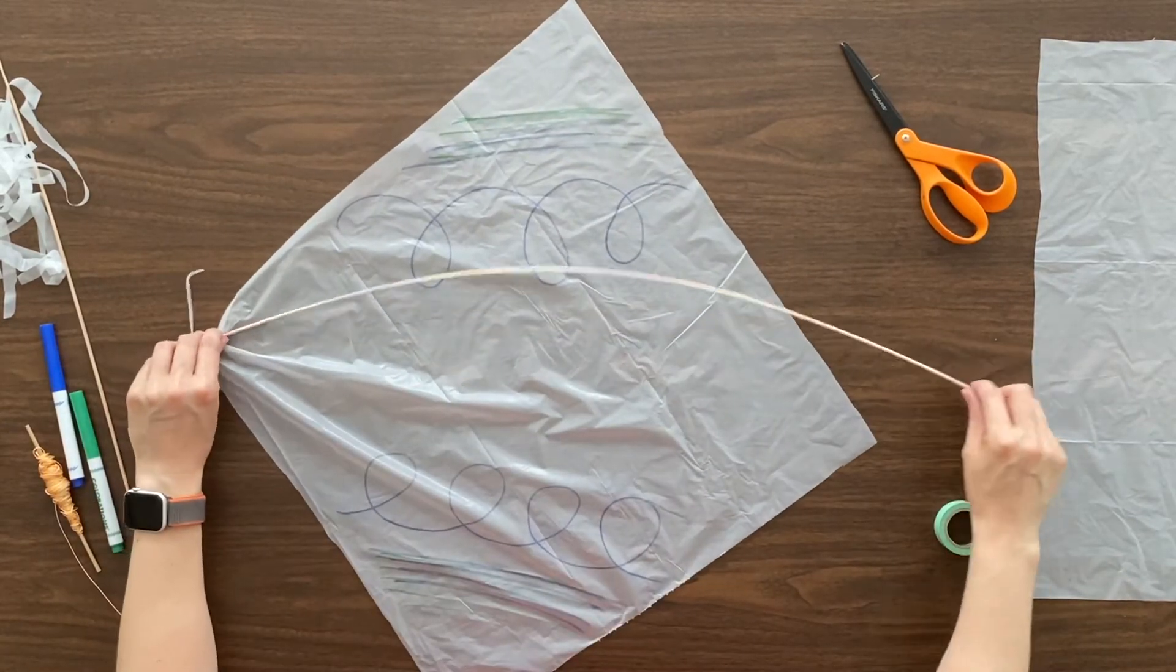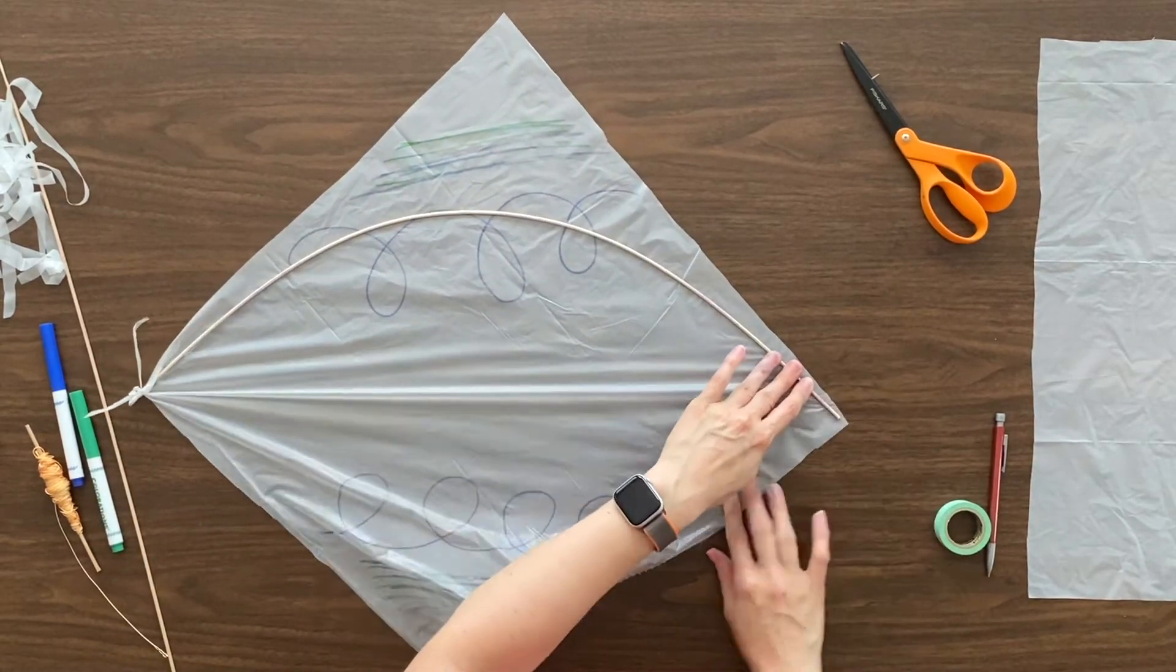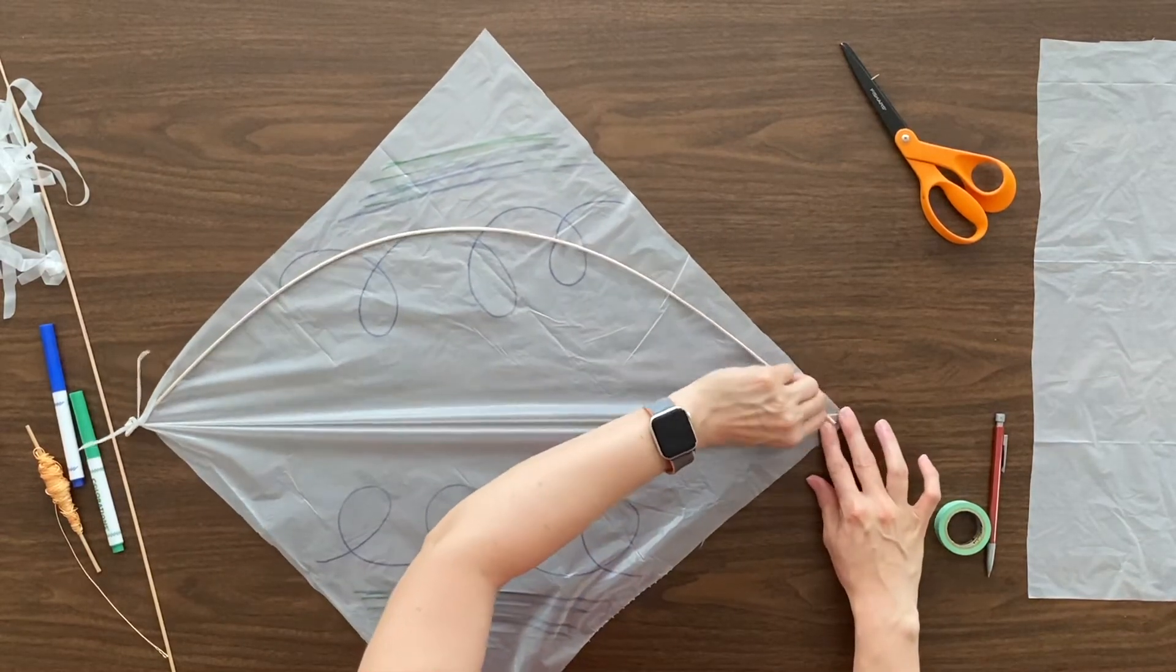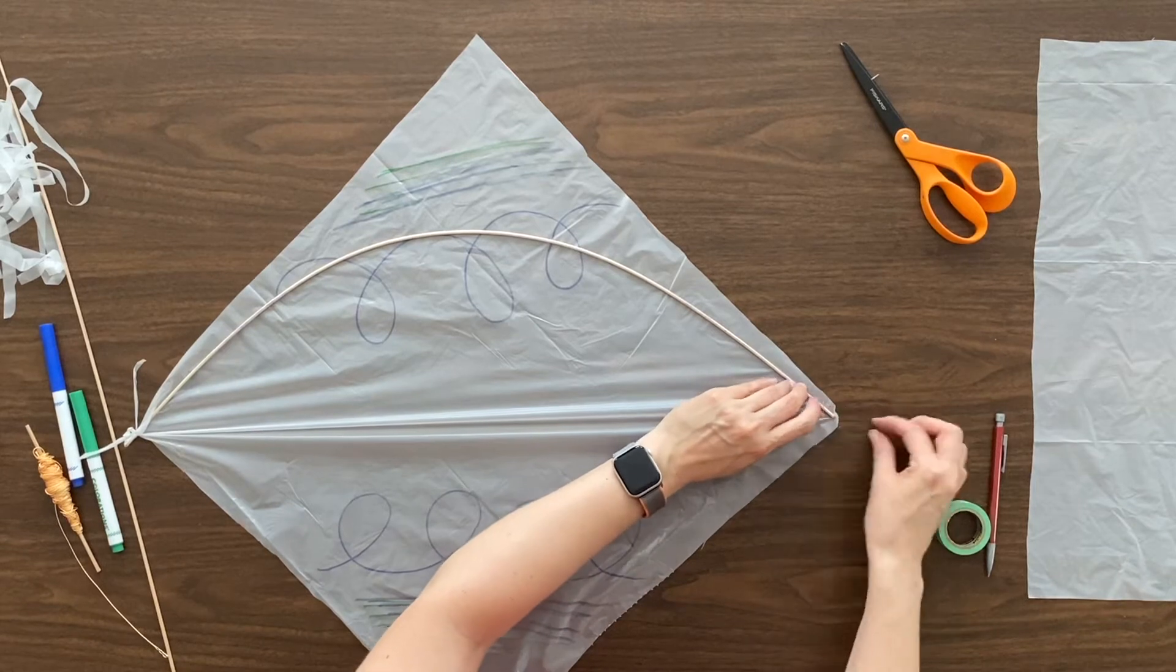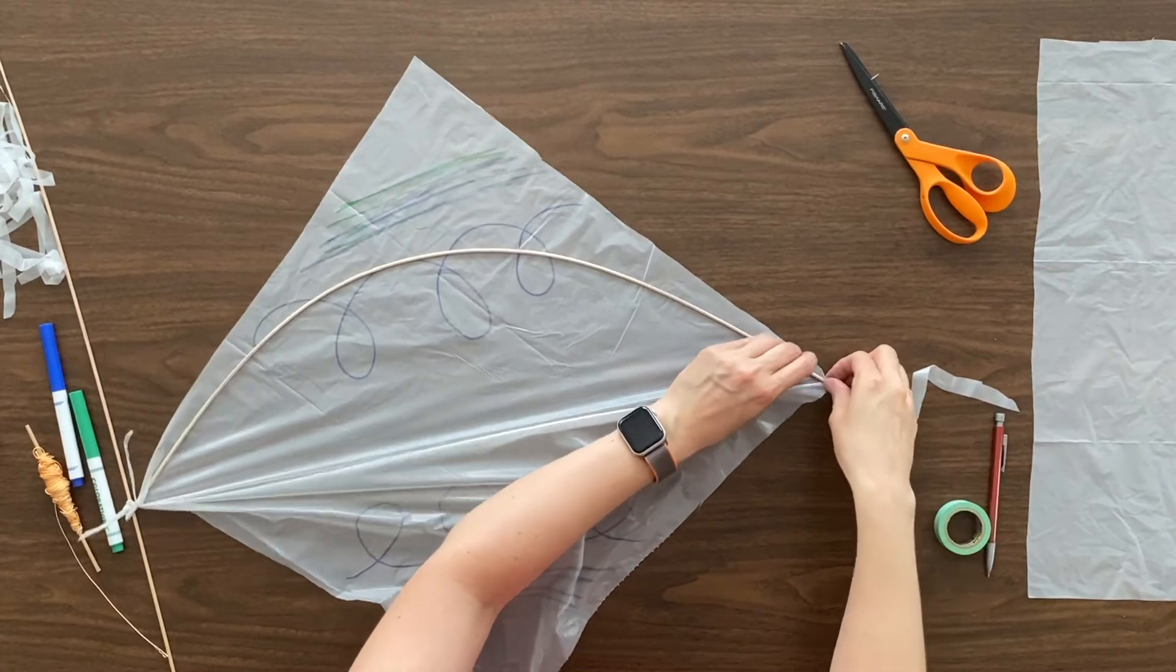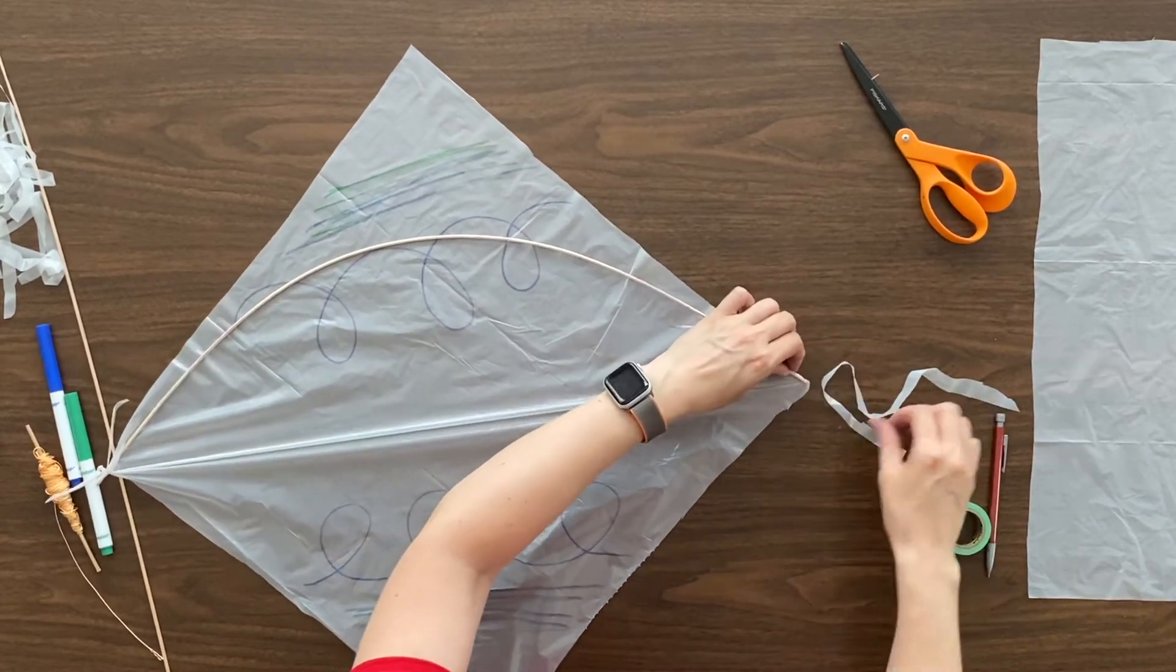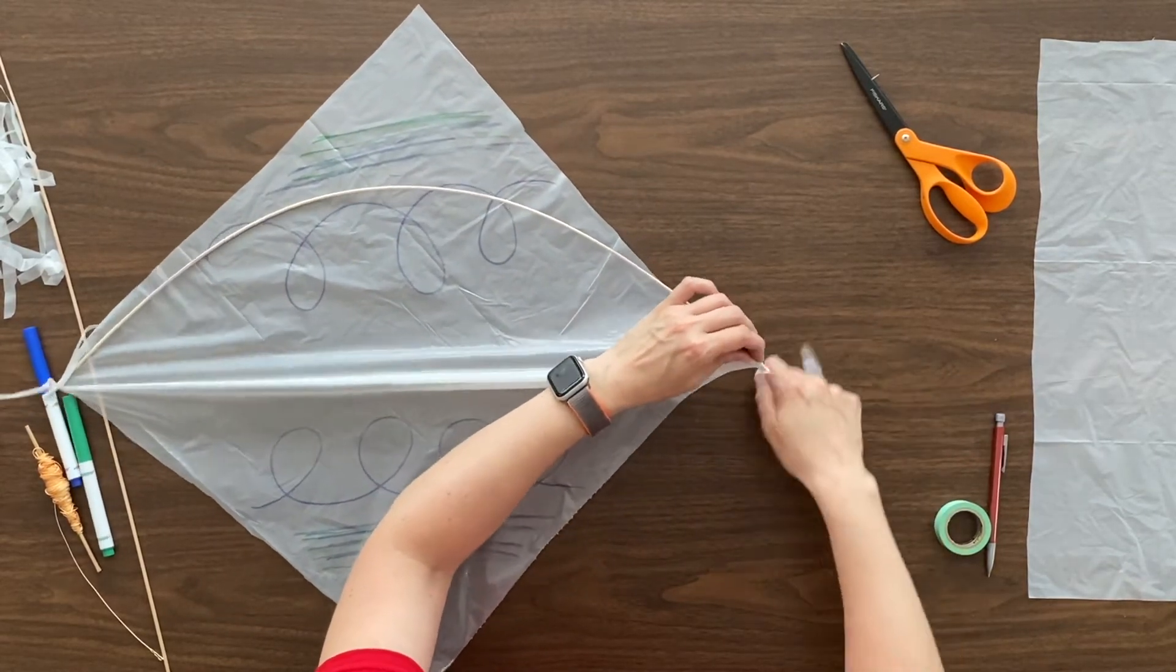Now, we're going to bend our dowel, and we're going to do the same to the other side. The easiest way to do this is to hold your dowel with one hand, fold that plastic over, get a strip, see if you can hold that with one hand, and wrap with the other.